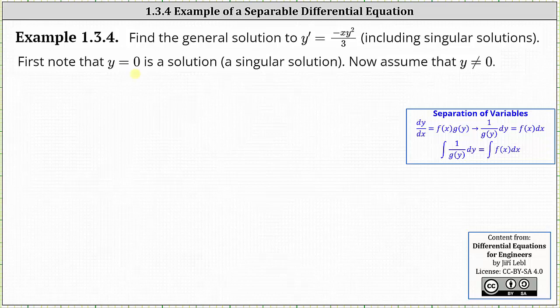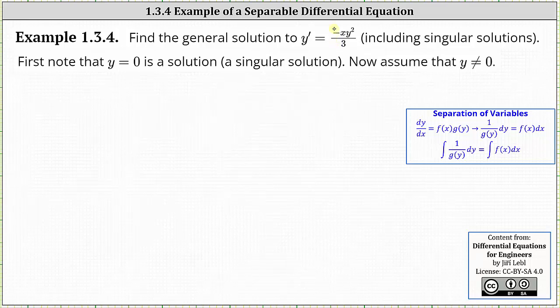Notice when y is equal to zero, y prime is also equal to zero, and y equals zero does always have a slope of zero. Now we will assume that y doesn't equal zero and solve the differential equation using the technique of separation of variables.